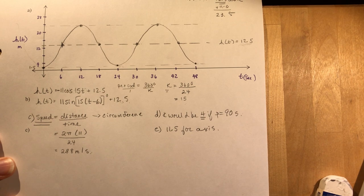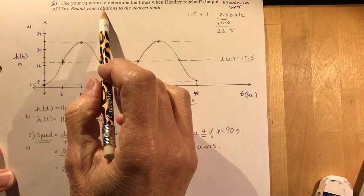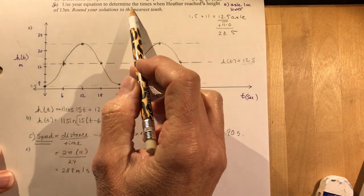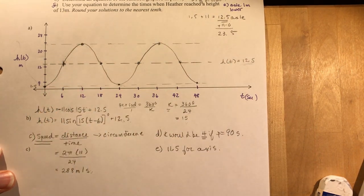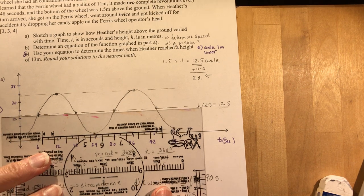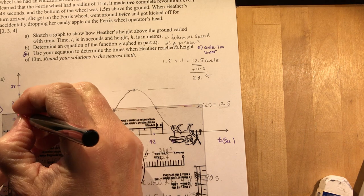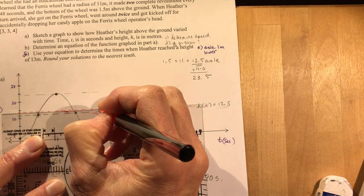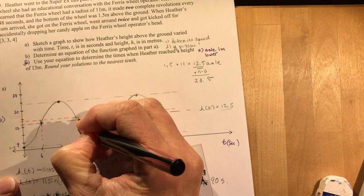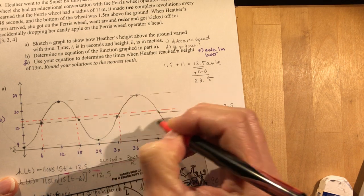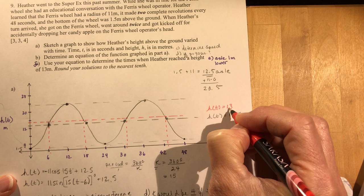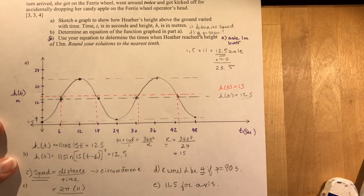Now for the hardest question. Use your equation to determine the times when Heather reached a height of 13 meters. So you should probably take your axis, 13 meters, find 13 meters. So 13 was just about here. So what I'm trying to do is find when she reaches this height on the graph. And that would be at this point here, at this one here. So I have four solutions where the height, when is the height going to be 13? Now the question is, how do you calculate that? How do I figure out when the height is 13?